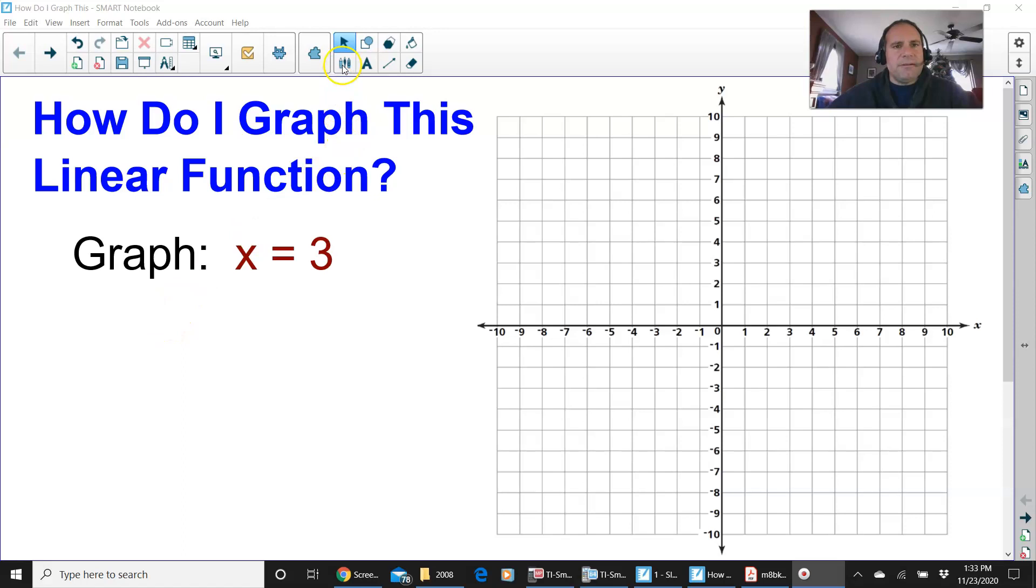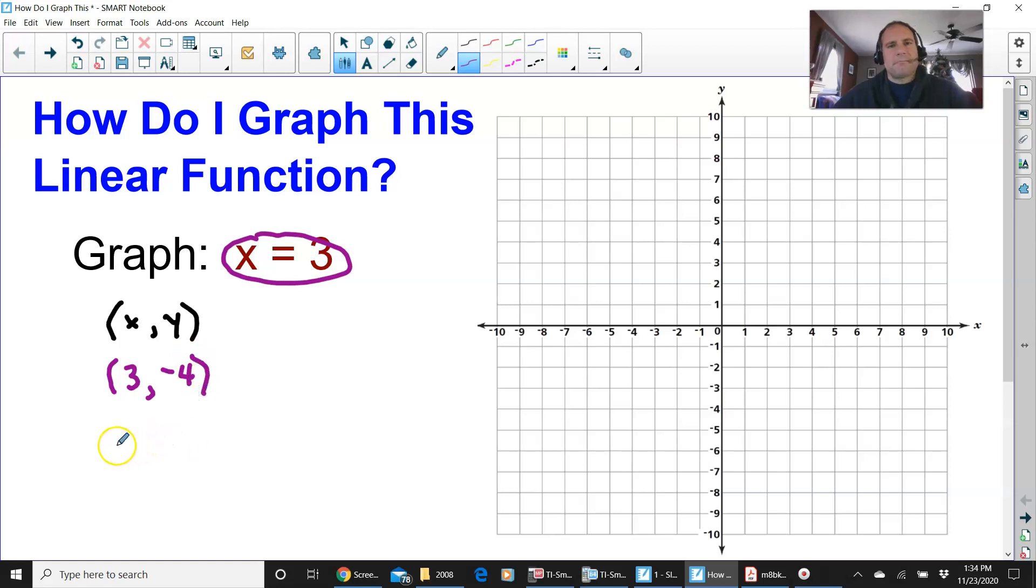So x equals 3. You know that every coordinate is an x first and y second. So what I want you to do is just pick out coordinates when x has to equal 3. So I'm going to put 3 as my x and negative 4 as my y. I'm going to put 3 as my x. Remember 3 has to be the x coordinate and then negative 2 as my y.